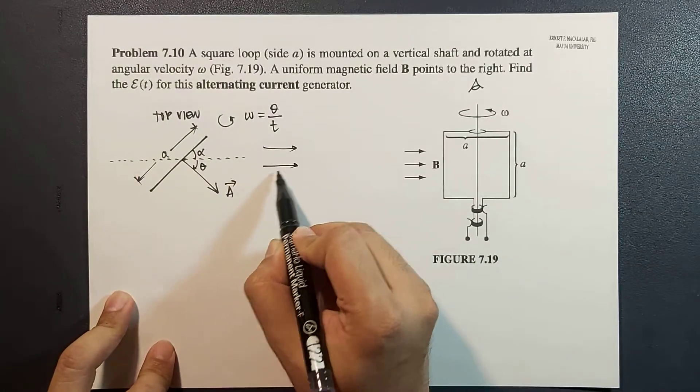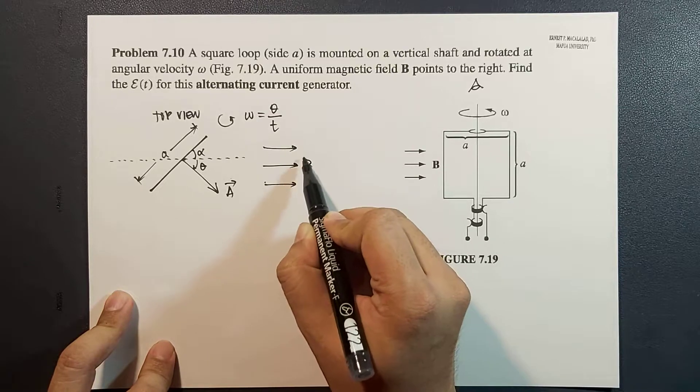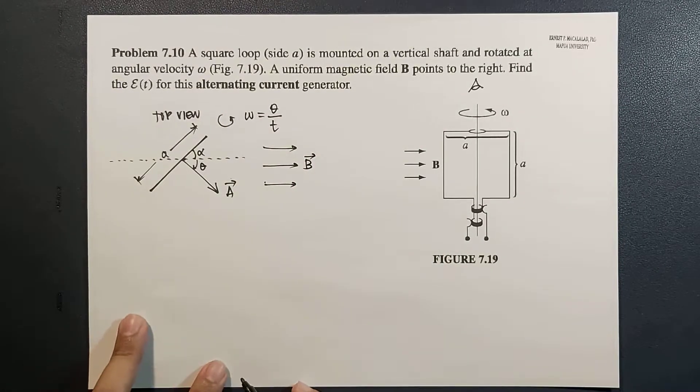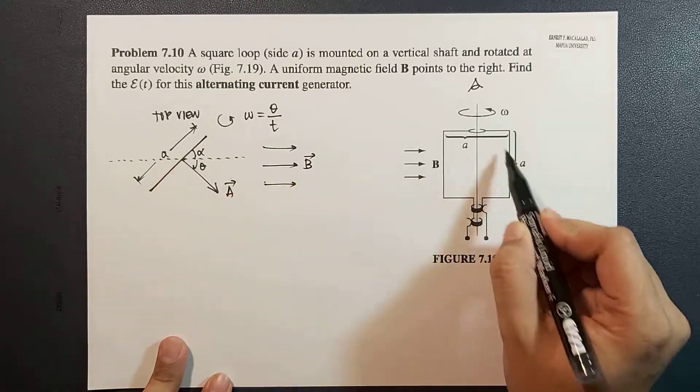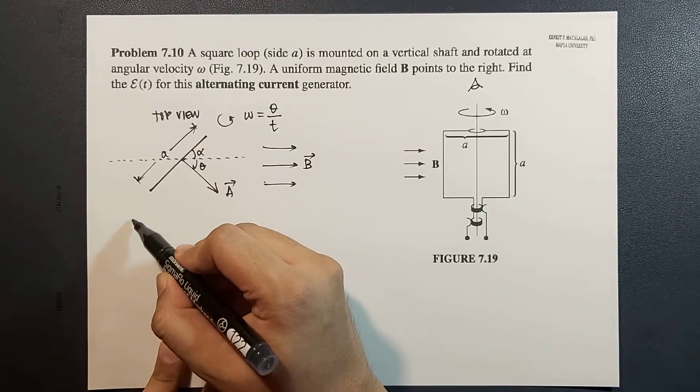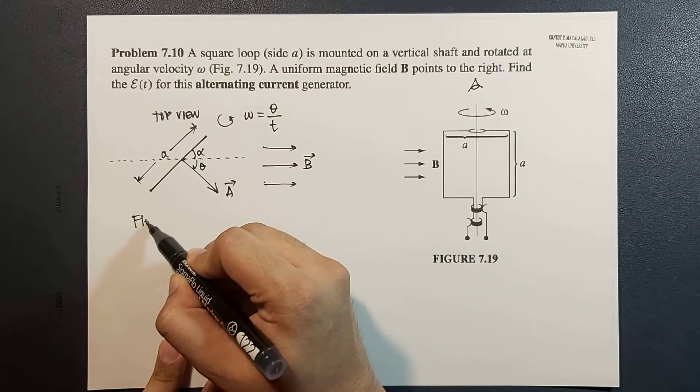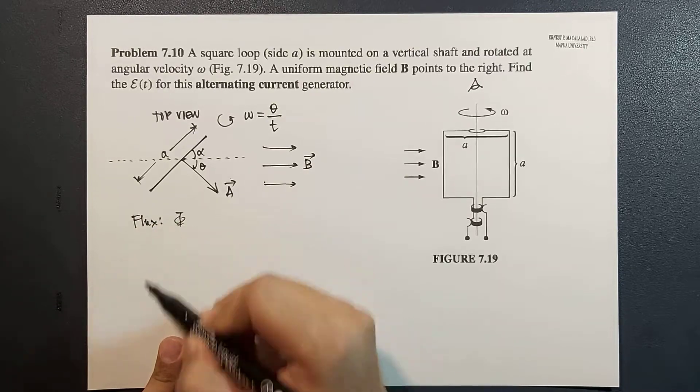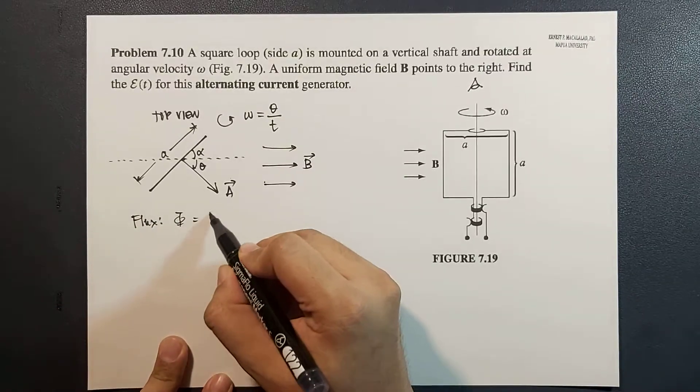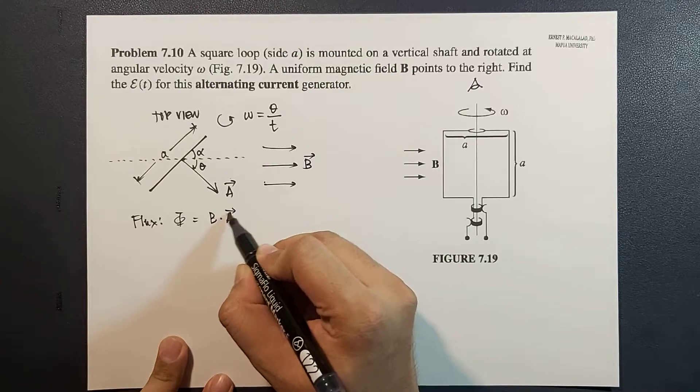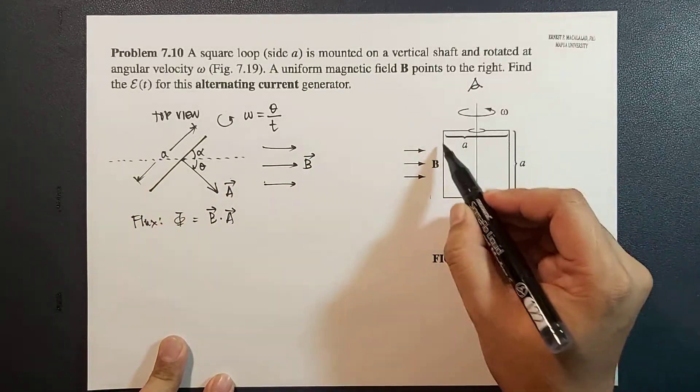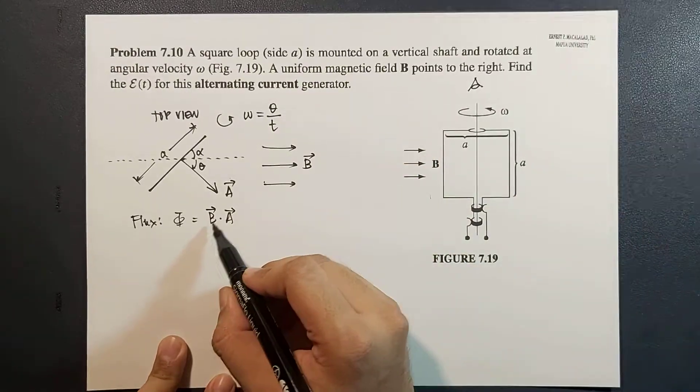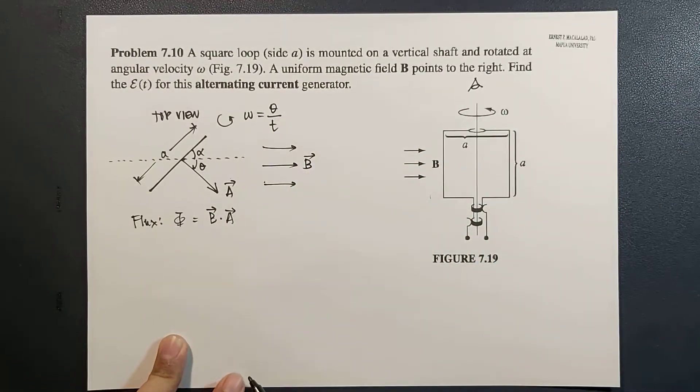Now if the magnetic field is in this direction and that is uniform, therefore the flux on this area, the magnetic flux on this area, would be equal to B dot A, where A is the constant area of your square loop and B is your uniform magnetic field.